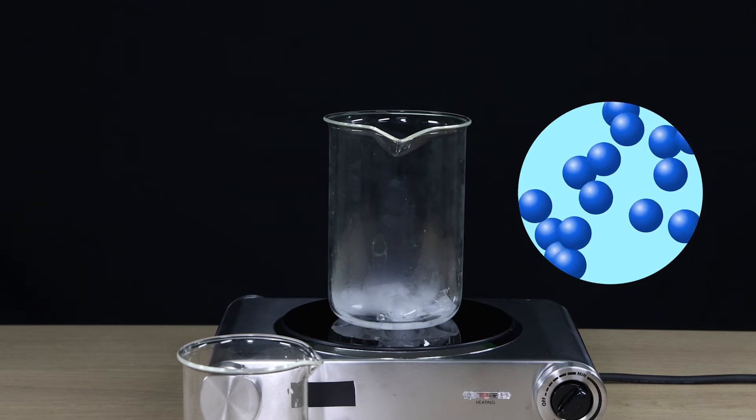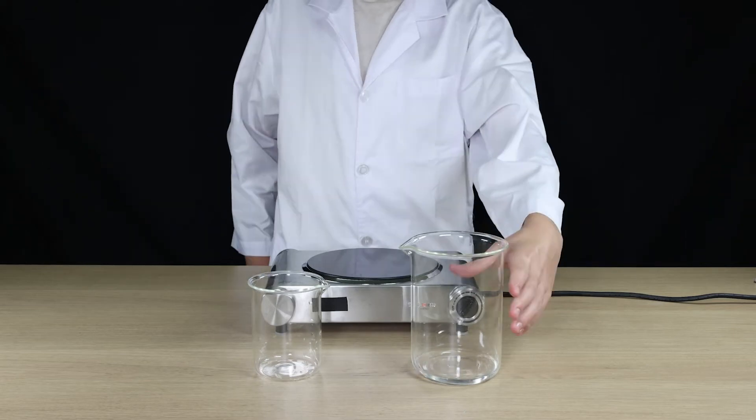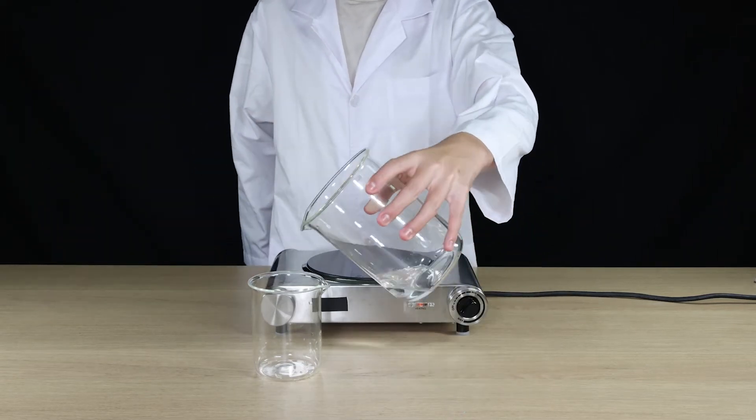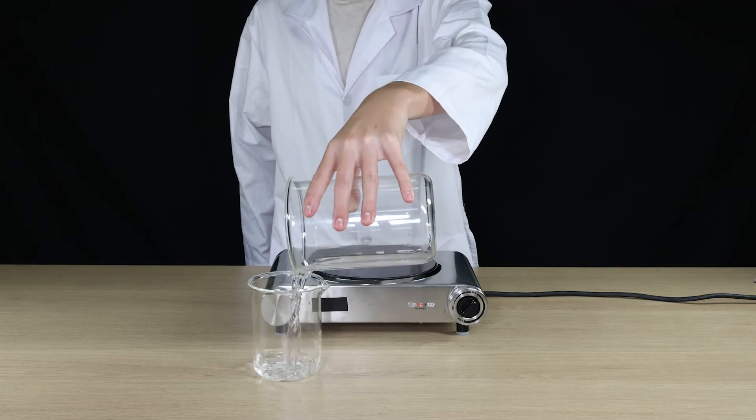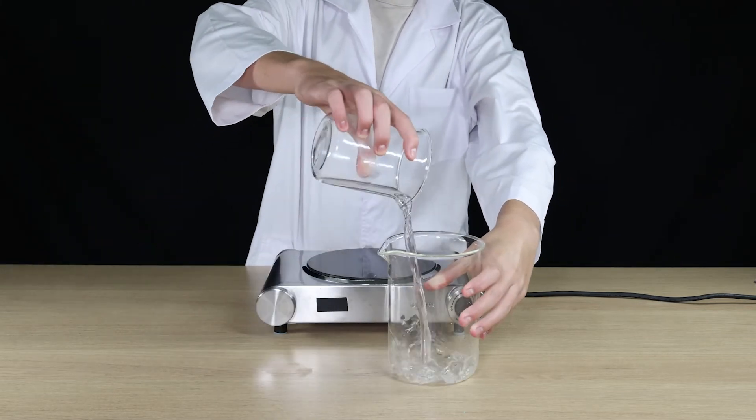A liquid will spread out to take the shape of the container it is in. When we pour water from container to another, the shape of the water changes, but the volume, the amount of space it takes up, stays the same.